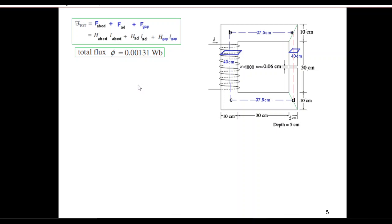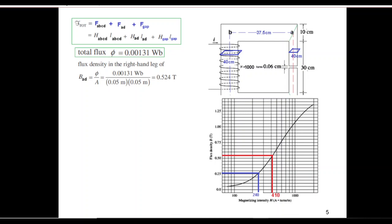So we found total flux. Now same flux is flowing all the way. Dividing the flux by area we can now find the density of that particular wing or side. So B_AD, the flux density of AD, is the flux divided by the area. Now area here is 5 cm by 5 cm, converting into meters it will be 0.05 multiplied by 0.05. So this is B_AD. And from the graph now we can calculate the H. For 0.524 we can calculate it to be 410. So H_AD is 410.